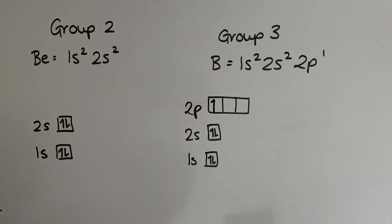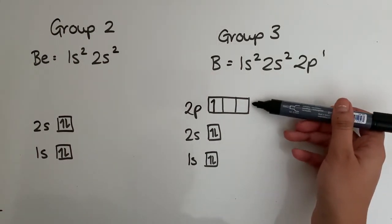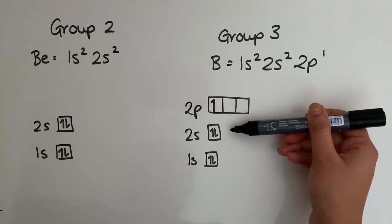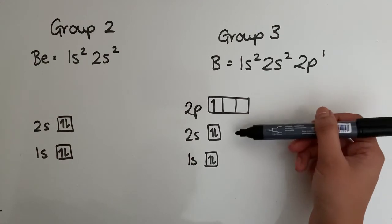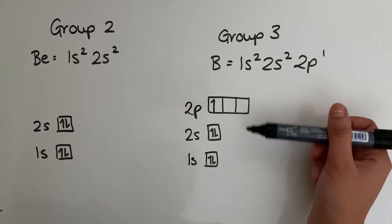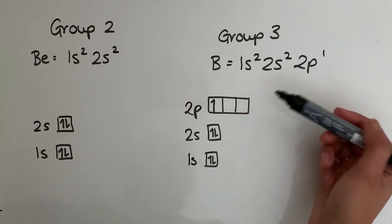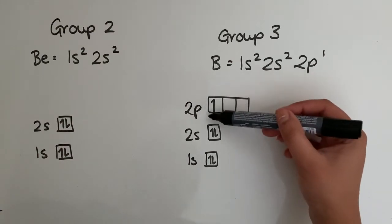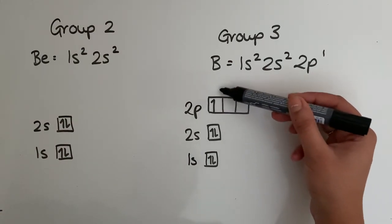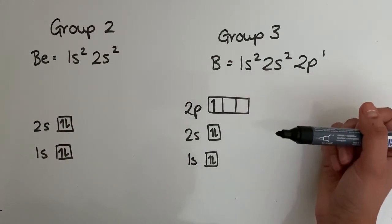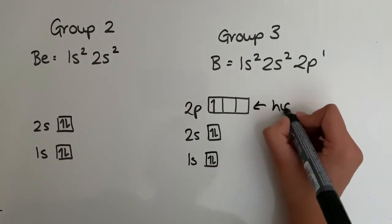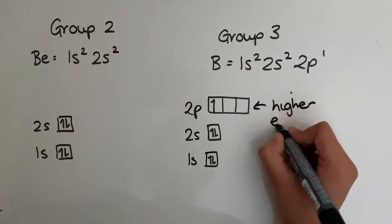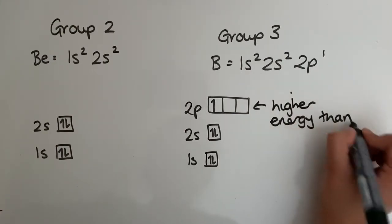What you need to know is that the 2p is at a higher energy than the 2s. Even though they're within the same shell, 2p has more energy than 2s. And because this has more energy, it's actually a lot easier. You require less energy to remove the electron in that 2p orbital.